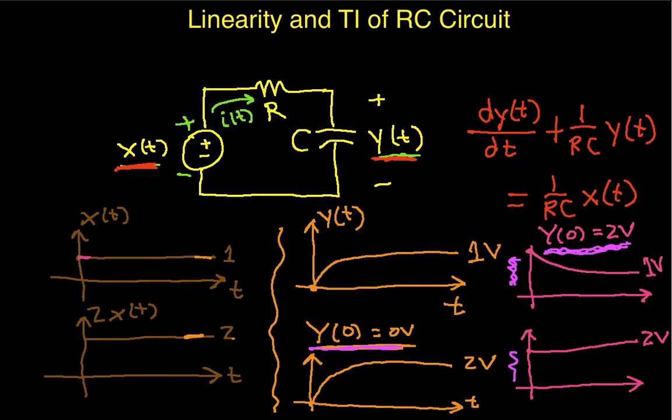Okay, in part one of this video, we started looking at this RC circuit and tried to determine whether or not the circuit was linear. We discovered that the circuit satisfies homogeneity if the initial capacitor voltage is zero. If the initial capacitor voltage is not zero, the circuit does not satisfy homogeneity.